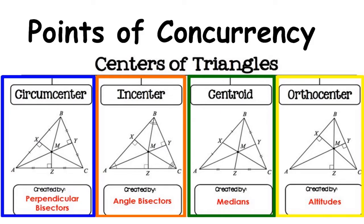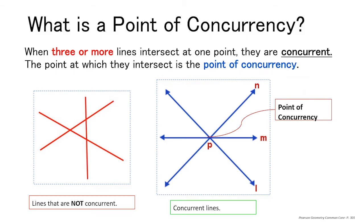In this lesson I'm going to do an overview of the four types of centers of triangles, or their points of concurrency: the circumcenter, incenter, centroid, and orthocenter. Not going too much into details with practice problems, just simply giving an overview of these centers of triangles.